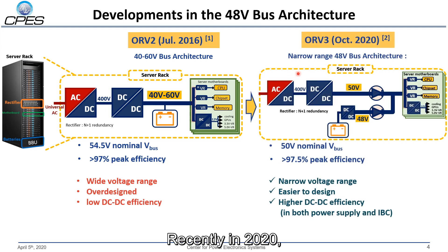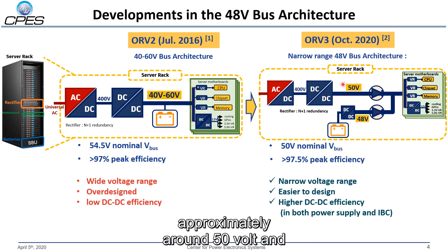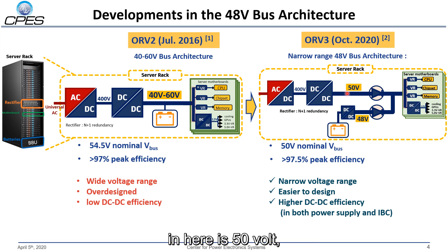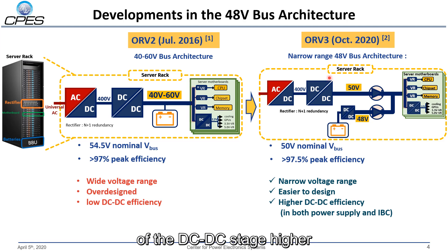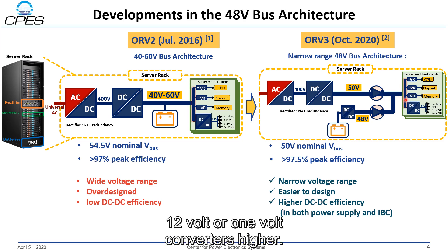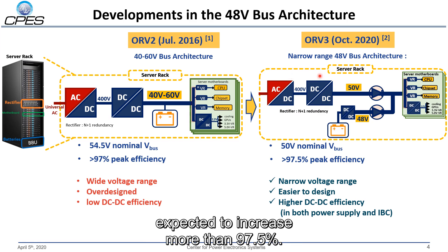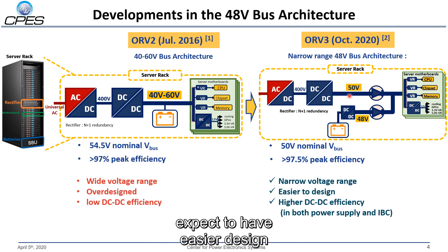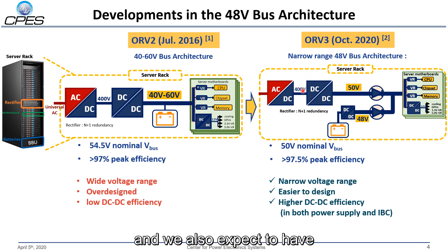Recently in 2020, the OpenCompute project released the new standard OpenRack version 3. Here, they fixed the output voltage to approximately 50V and the battery bank unit is charged independently using a separate battery charger. With no wide output range anymore, this makes the efficiency of the DC-DC stage higher and also the efficiency of the 48V to 12V or 1V converters higher. Therefore, the peak efficiency of the power supply unit is expected to increase to more than 97.5%, and we expect an easier DC-DC stage design with higher efficiency.